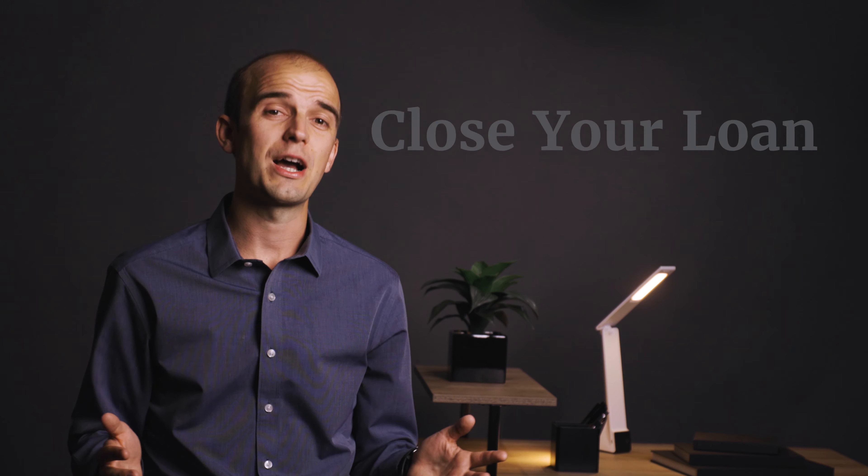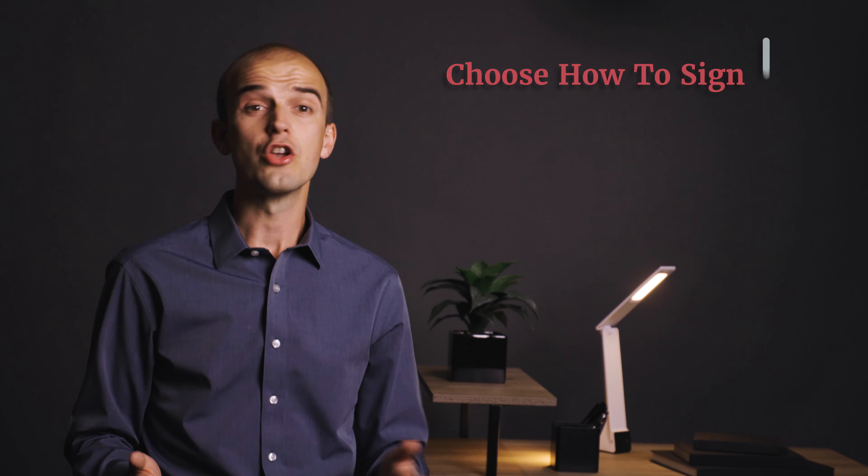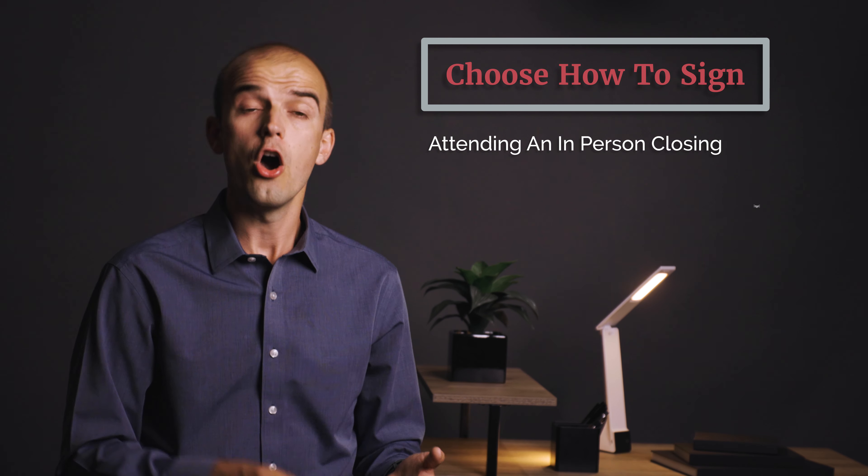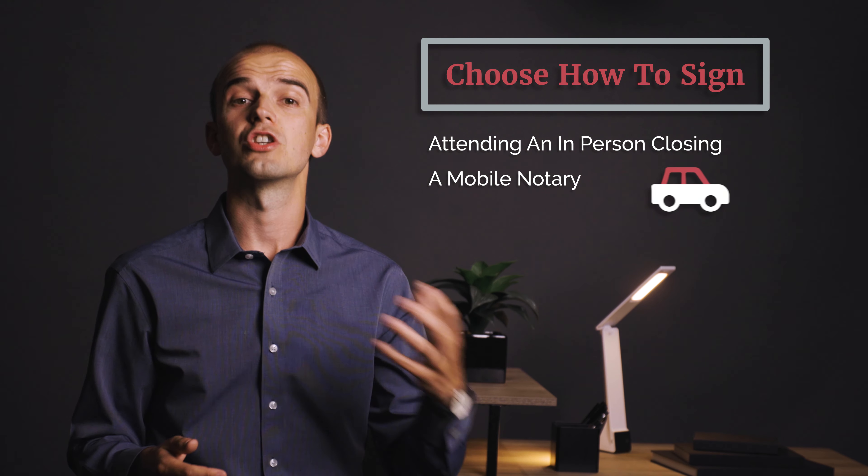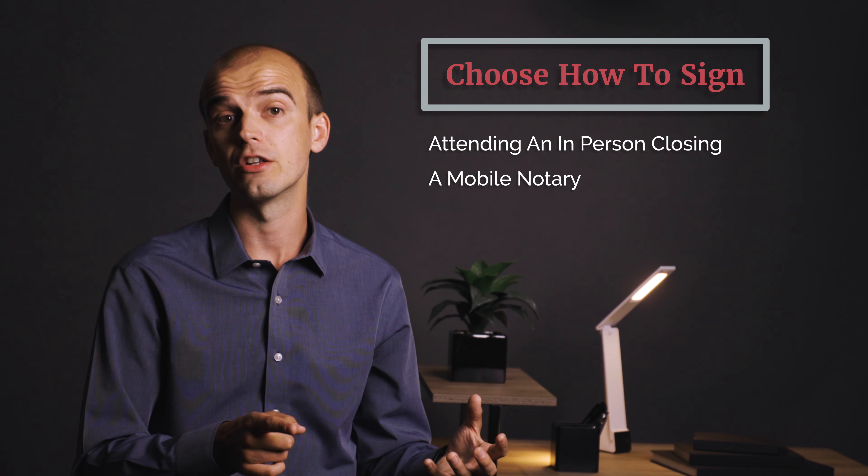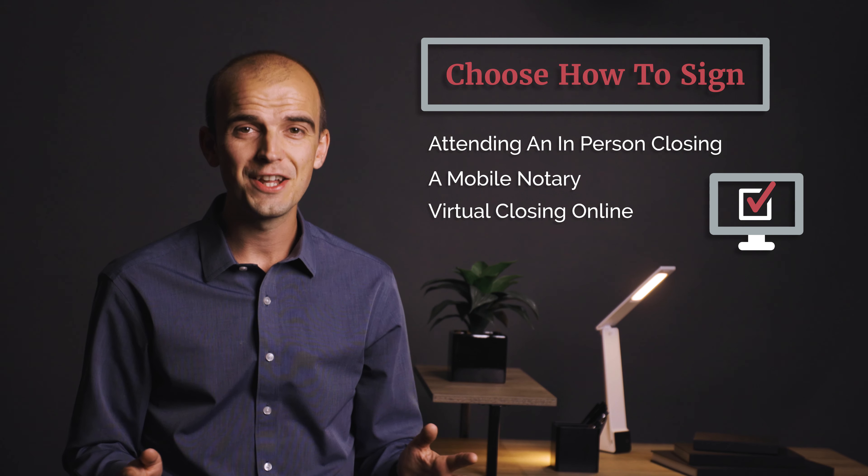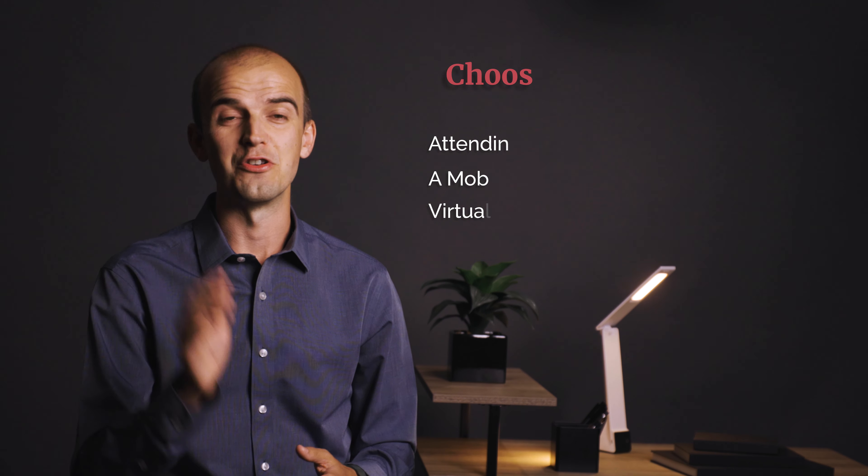The last part of the seven step process is simple. You need to close your loan. You can choose how you want to sign the final paperwork. Your options will range from attending an in-person closing at a local title company, a mobile notary who will come to you at a time and location that is convenient, or you can do a virtual closing online. Then all that's left is to enjoy your savings and the new loan term.